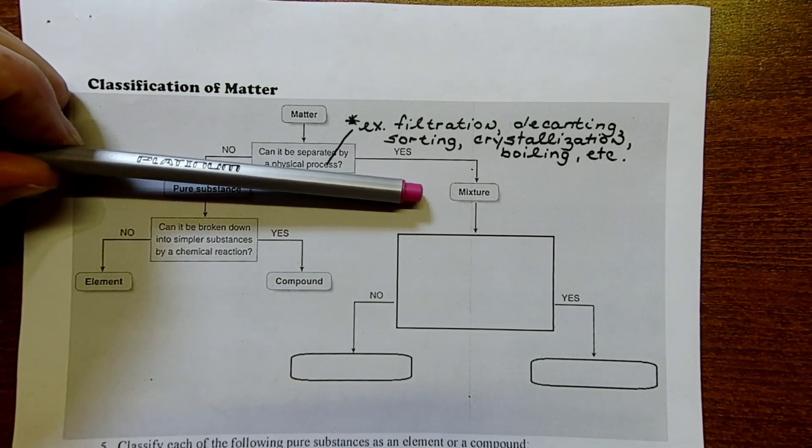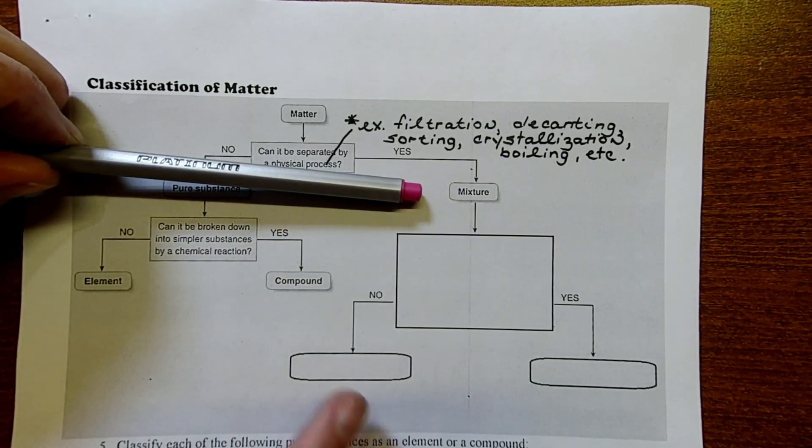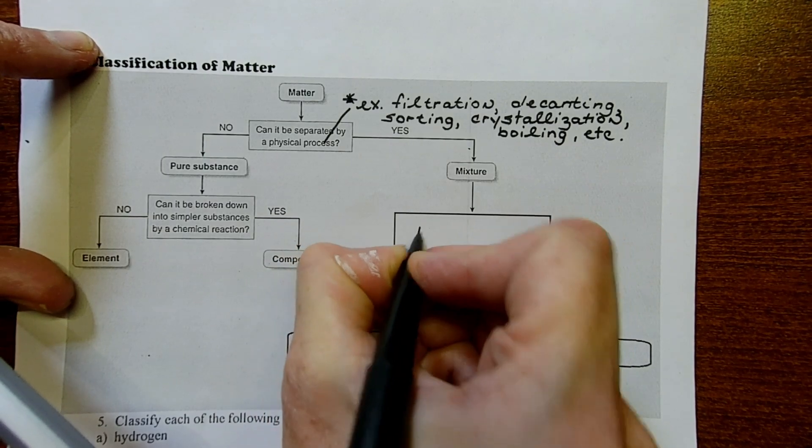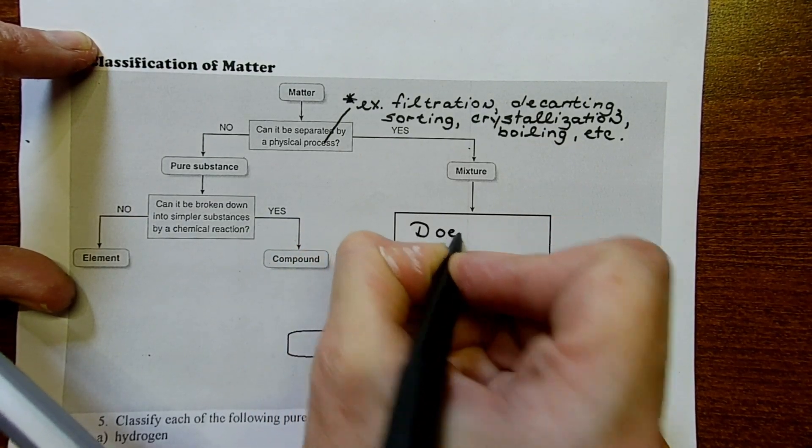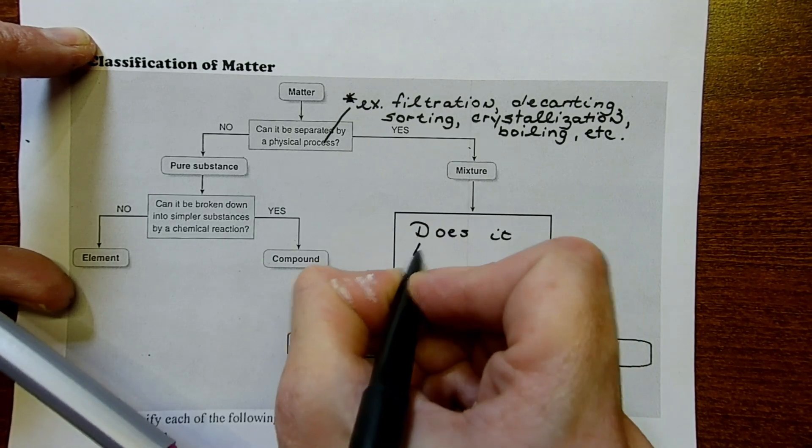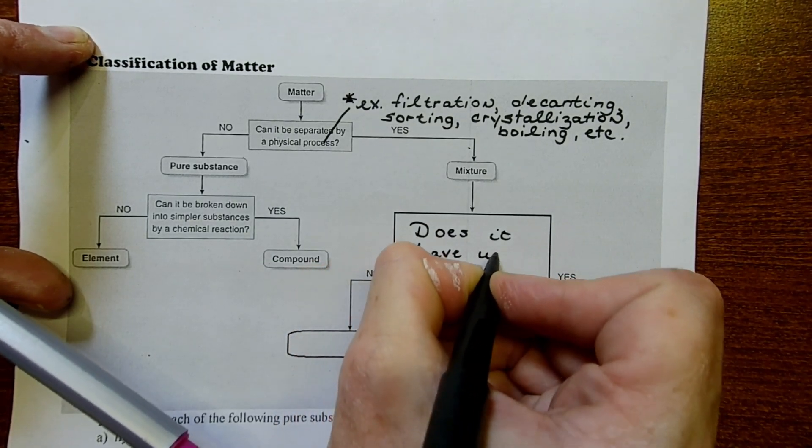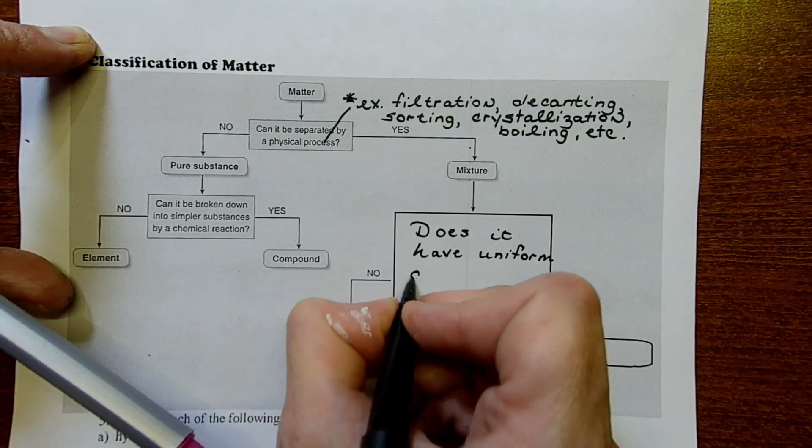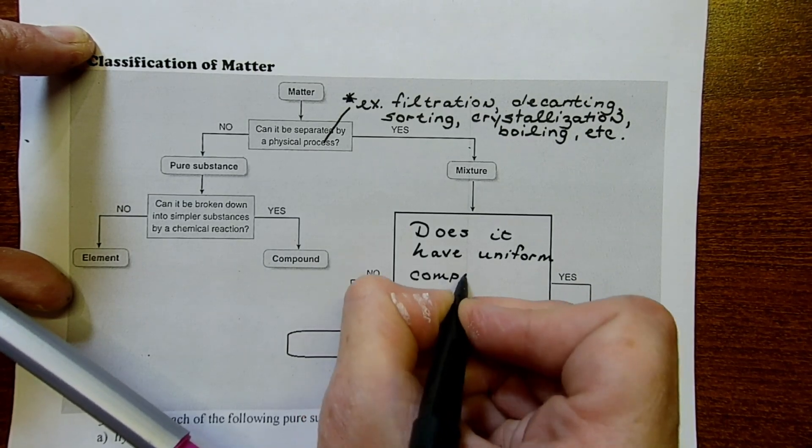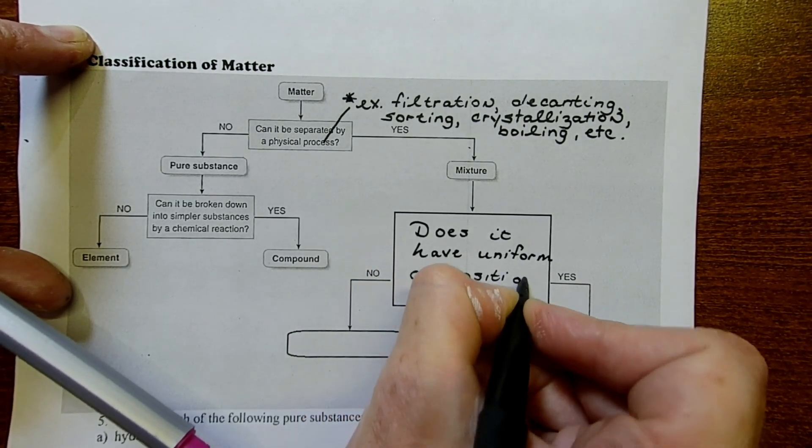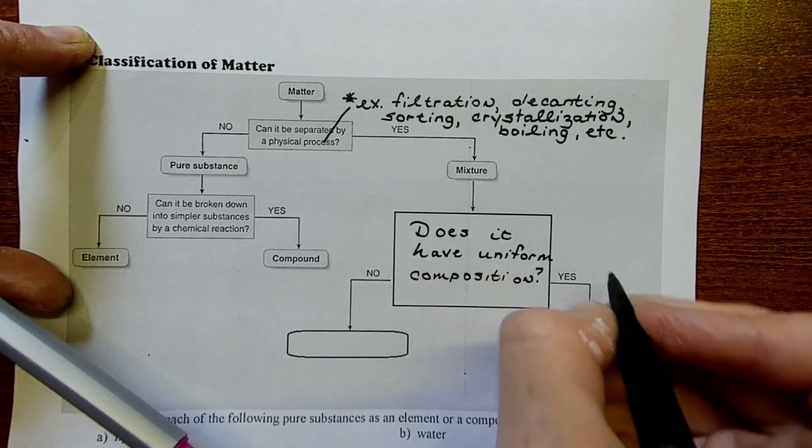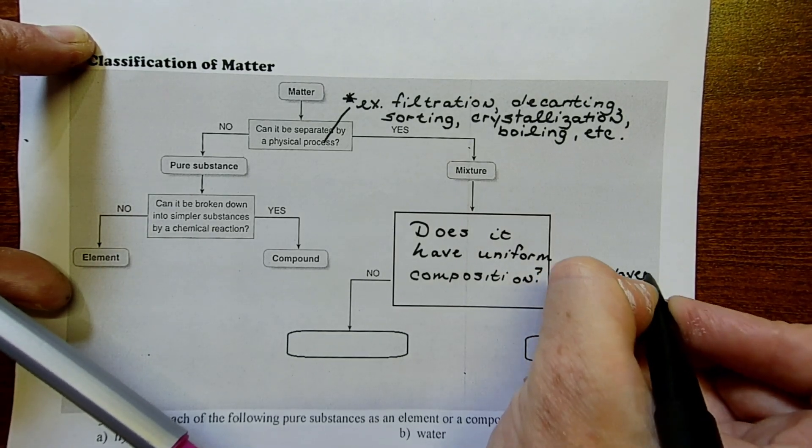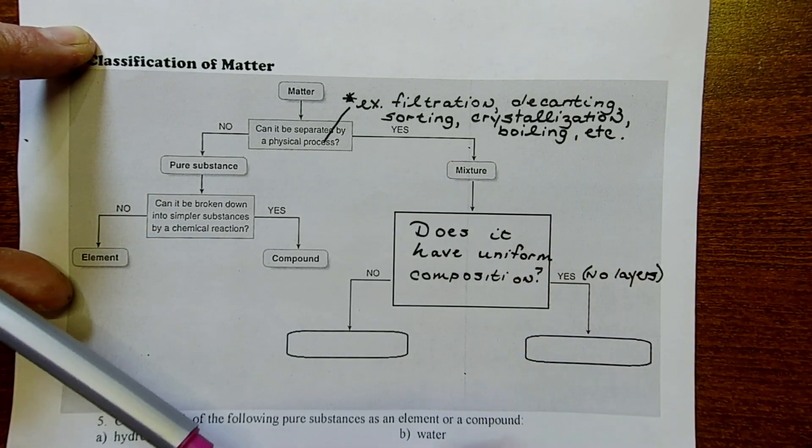Now we can break down the mixture into two different categories. We need to ask ourselves this question: Does it have uniform composition? So if something has uniform composition, if the answer to this is yes, then you're not going to see any layers. Yes would imply no layers, no floaties. Everything looks the same throughout.